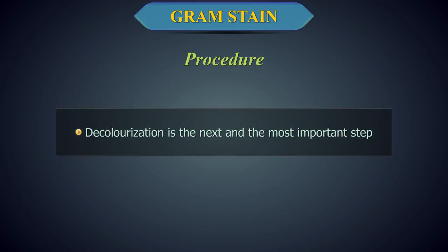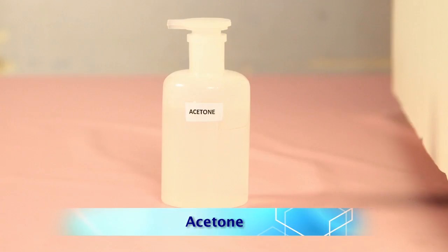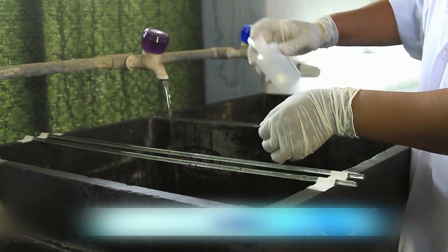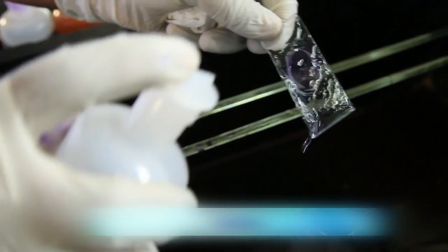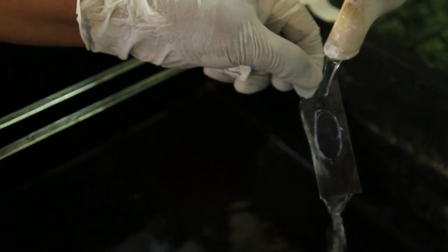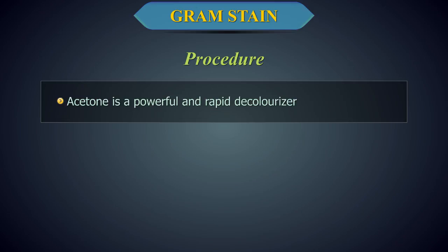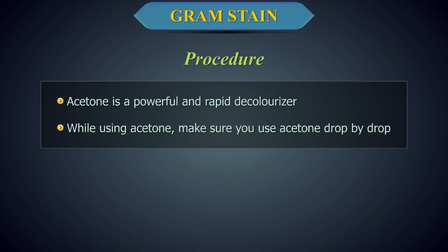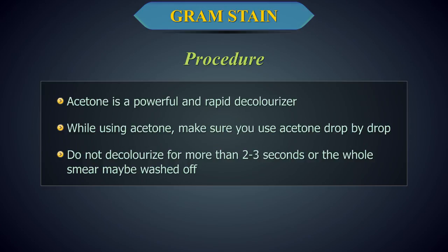Decolorization is the next and the most important step. Decolorize using 95% ethyl alcohol or acetone. Tilt the slide slightly and apply the alcohol drop by drop for 5 to 10 seconds until the alcohol almost runs clear. Immediately rinse with water. Acetone is a powerful and rapid decolorizer. While using acetone, make sure to use acetone drop by drop. Do not decolorize for more than 2-3 seconds or the whole smear may be washed off.